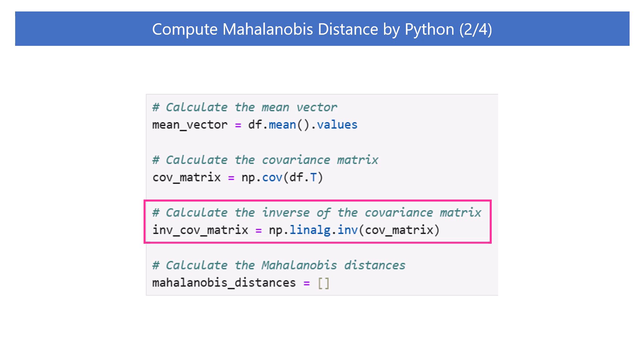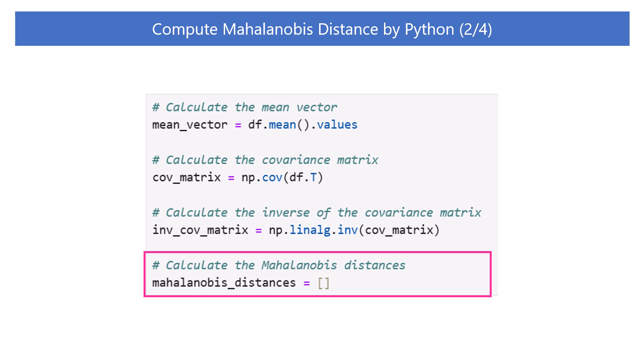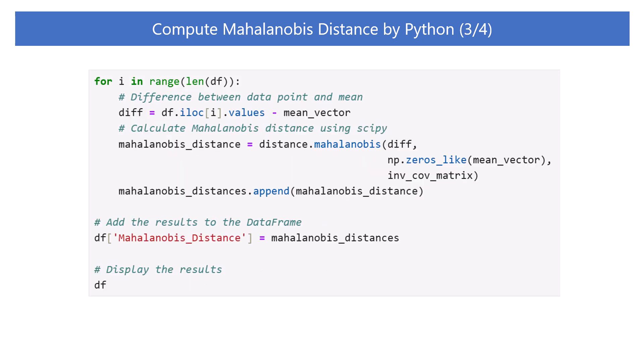Next, let's compute the inverse of the covariance matrix. Using NumPy's linear algebra inv function, we compute the inverse of the covariance matrix. Then, create an empty list to store the Mahalanobis distances. Using a for loop, we calculate the Mahalanobis distance for each data point. Set the for loop to iterate for the number of rows in dataframe DF.